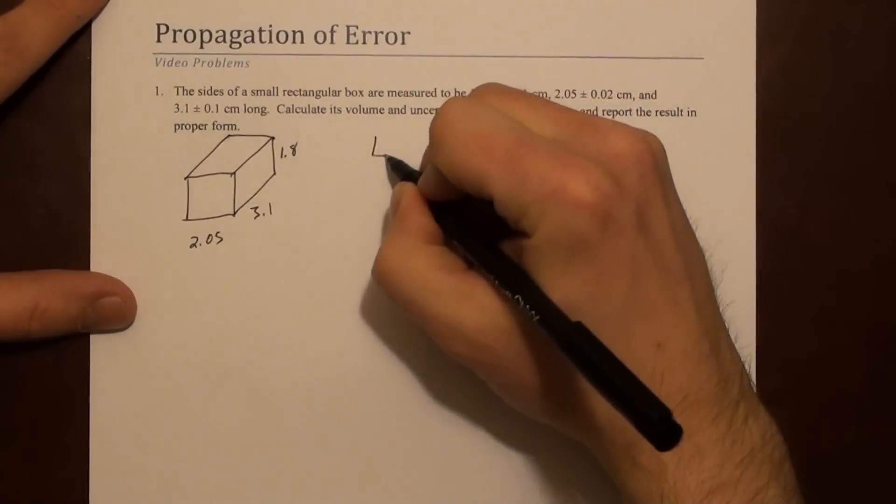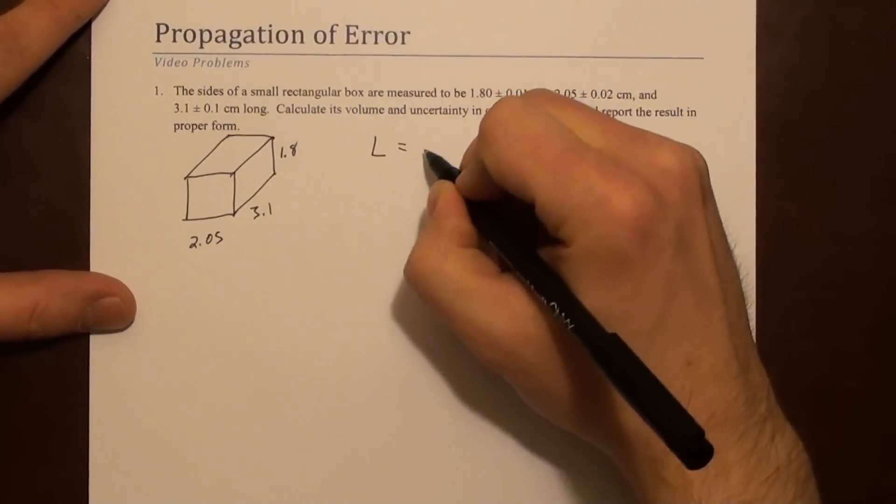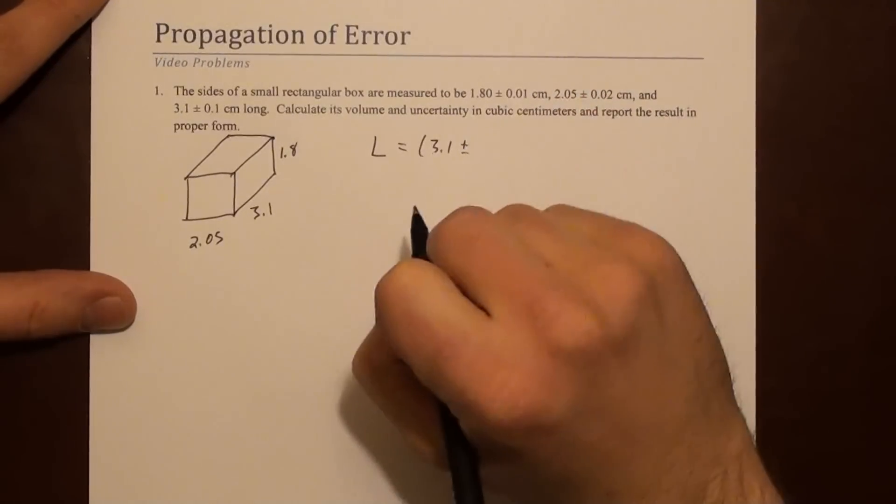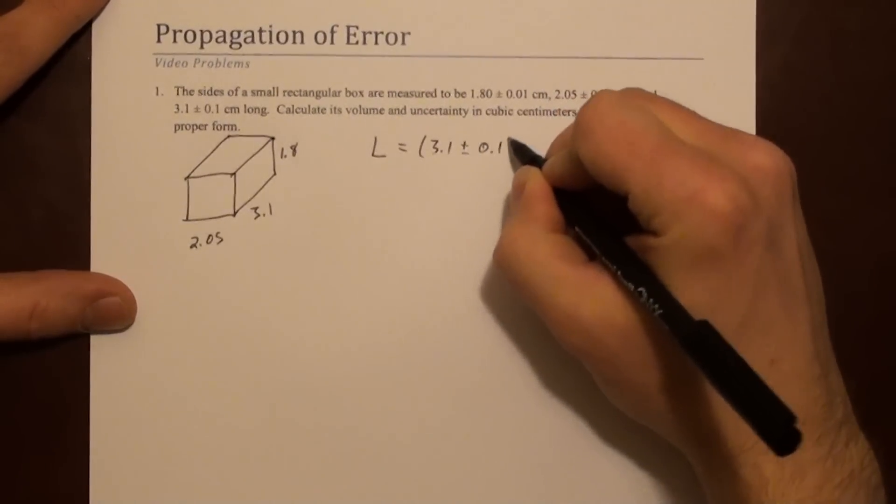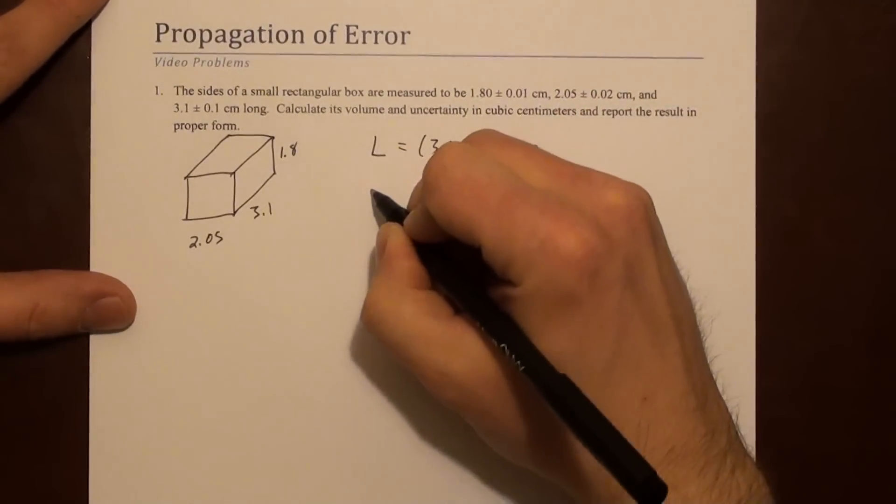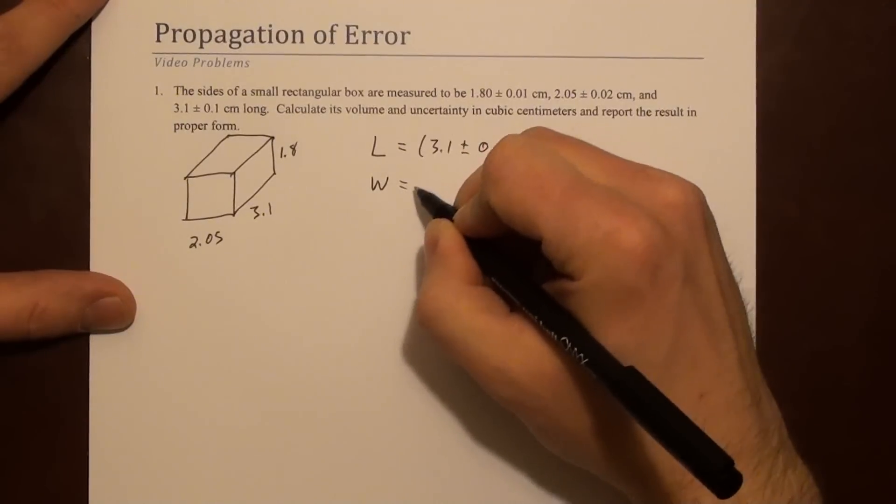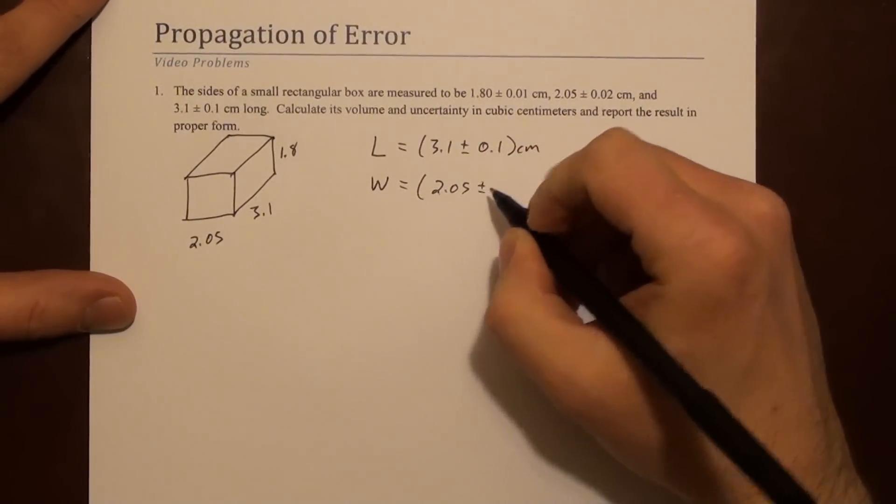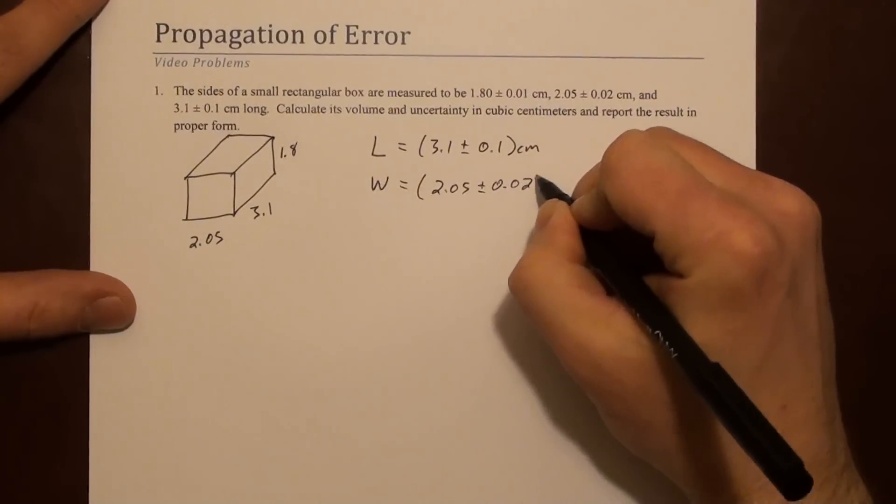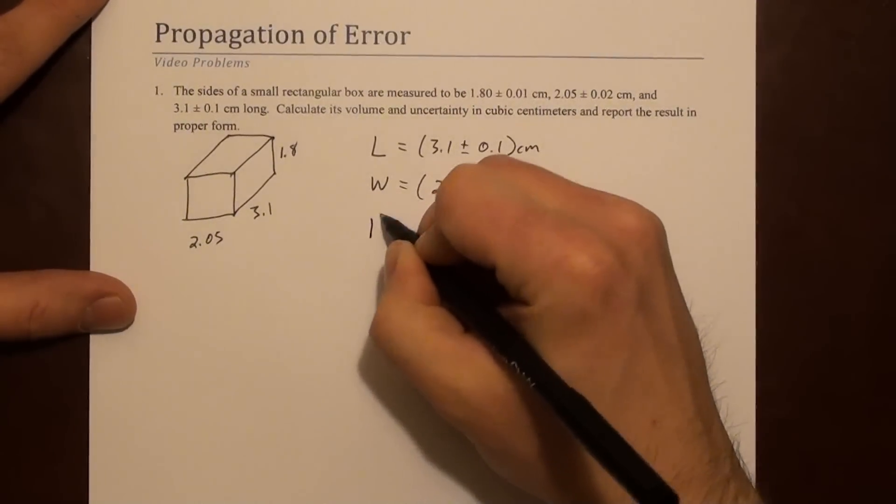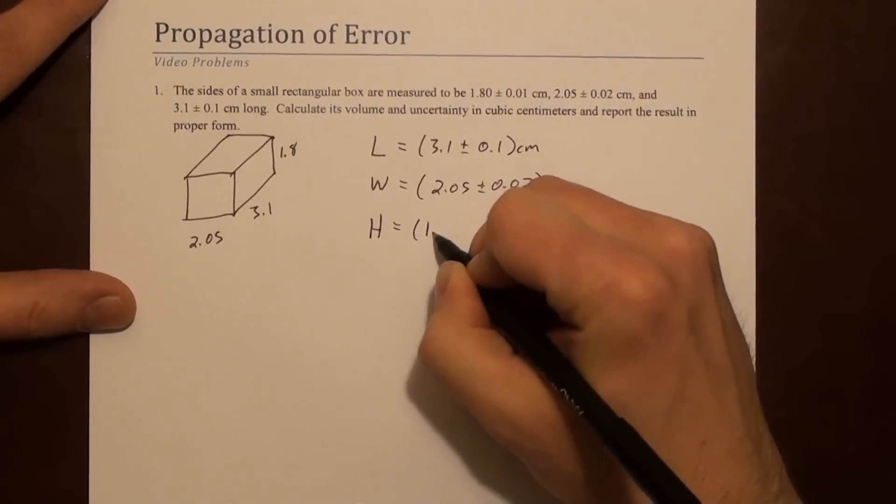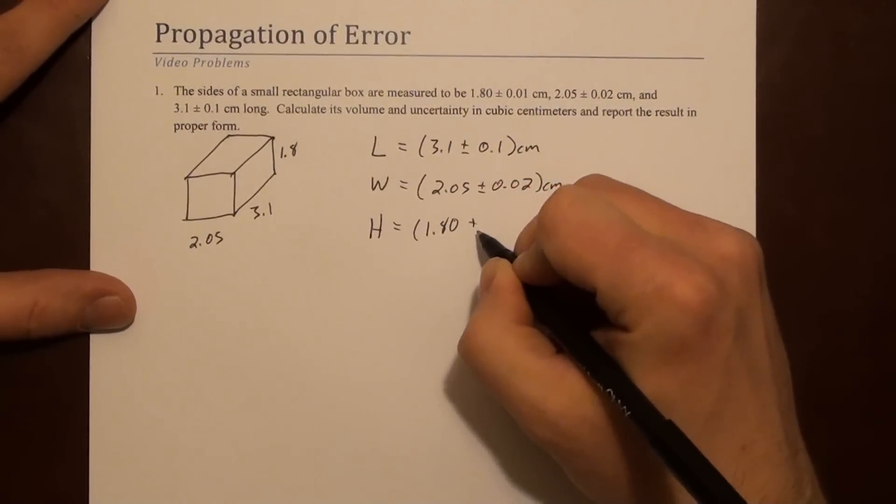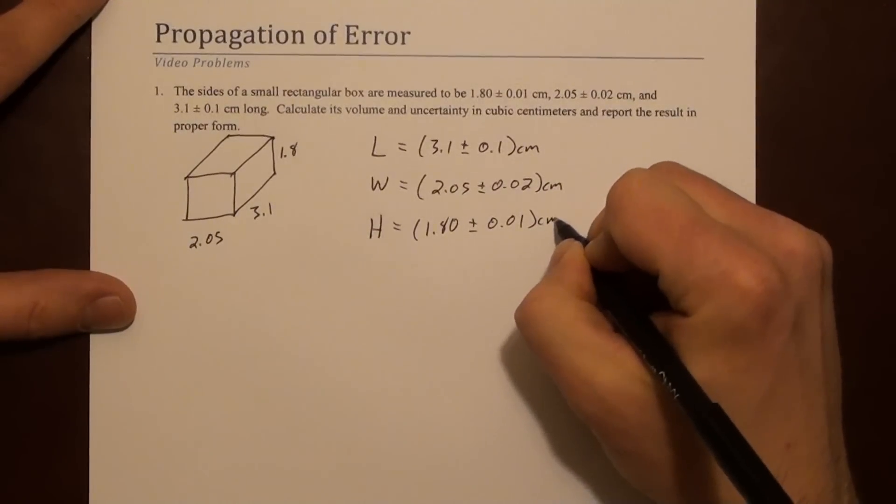Maybe the length is this 3.1 ± 0.1 cm. Maybe the width is 2.05 ± 0.02 cm. And maybe the height is the remaining 1.8 ± 0.01 cm.